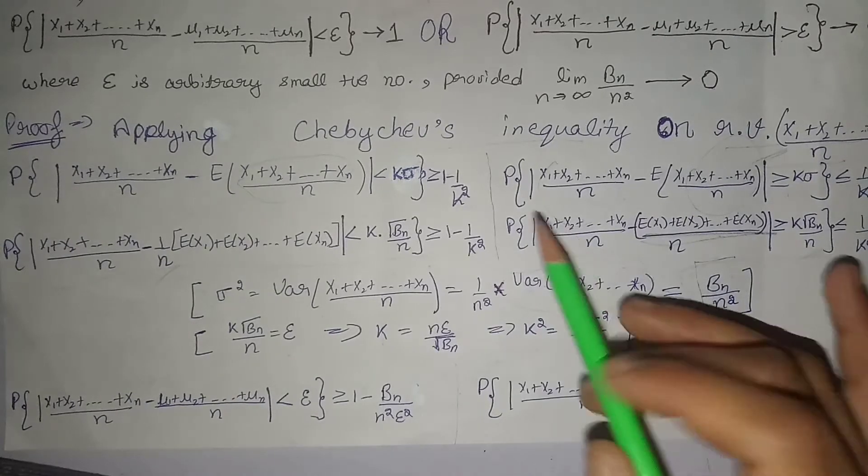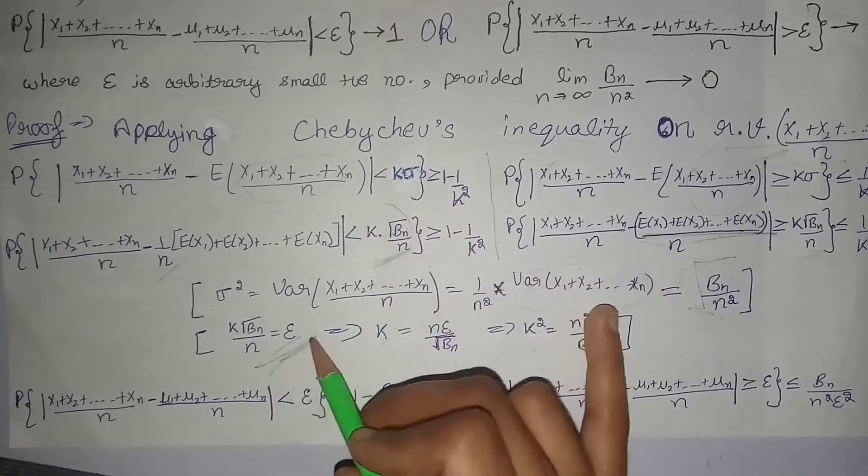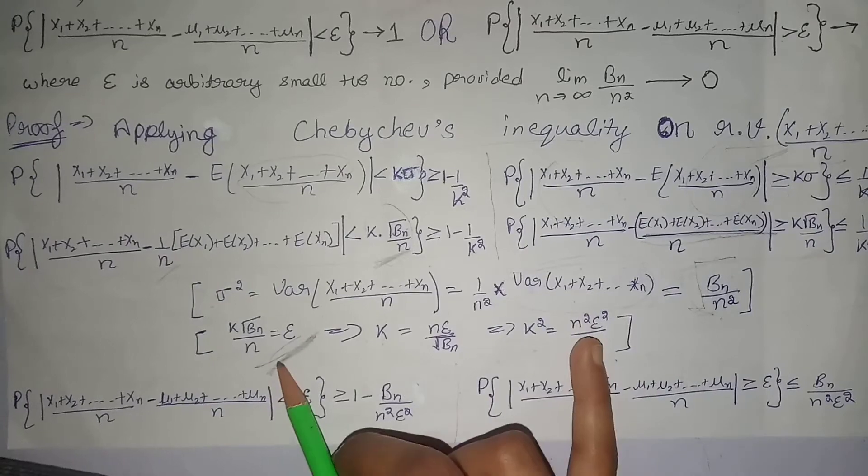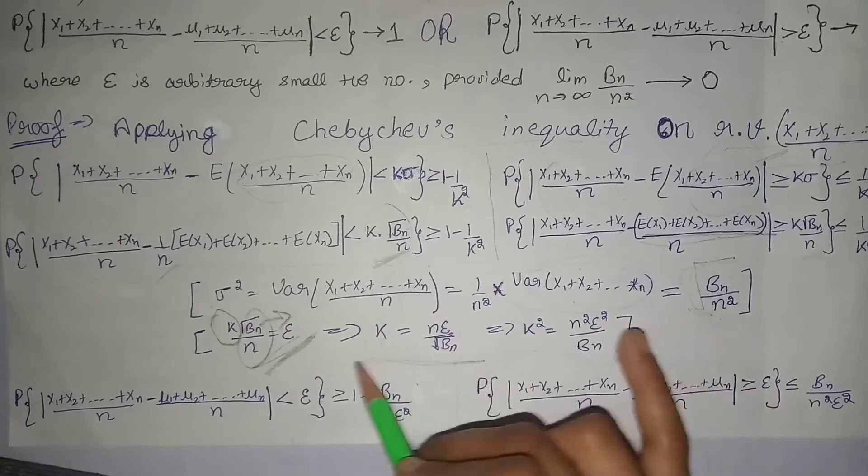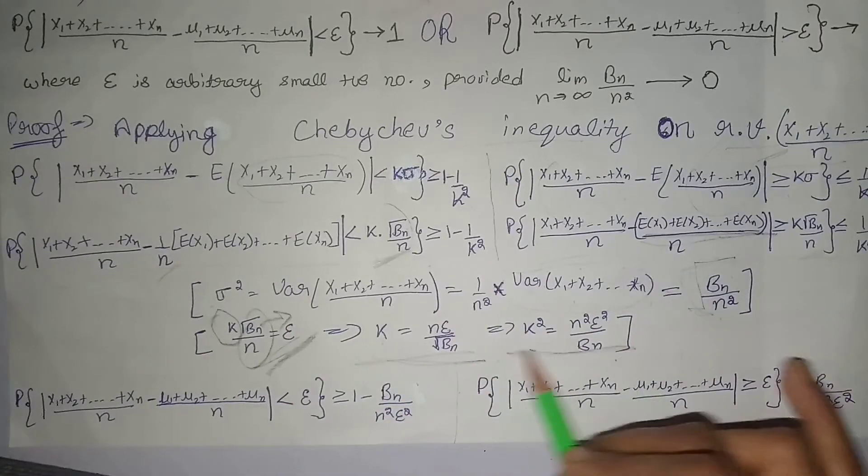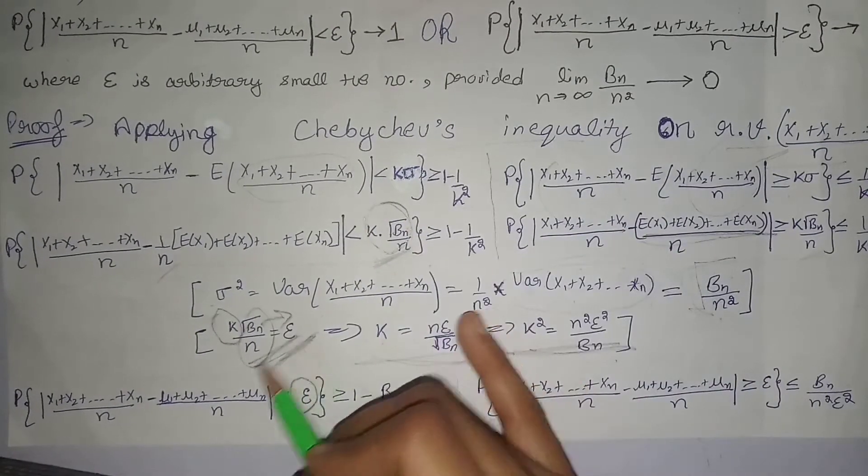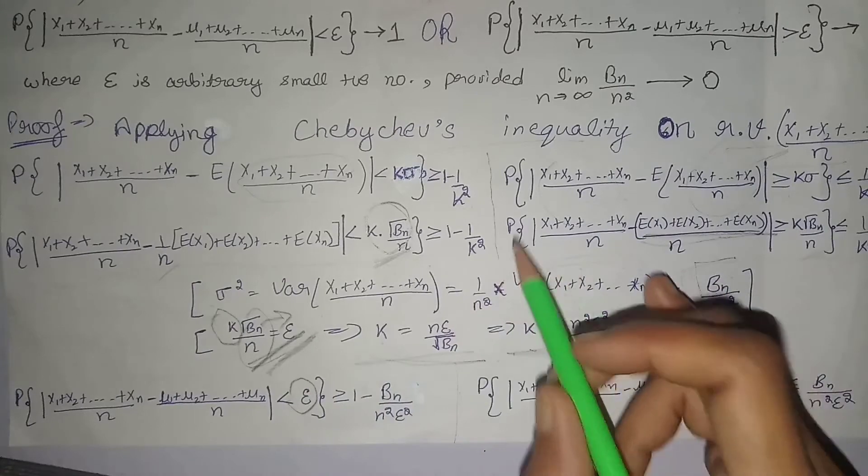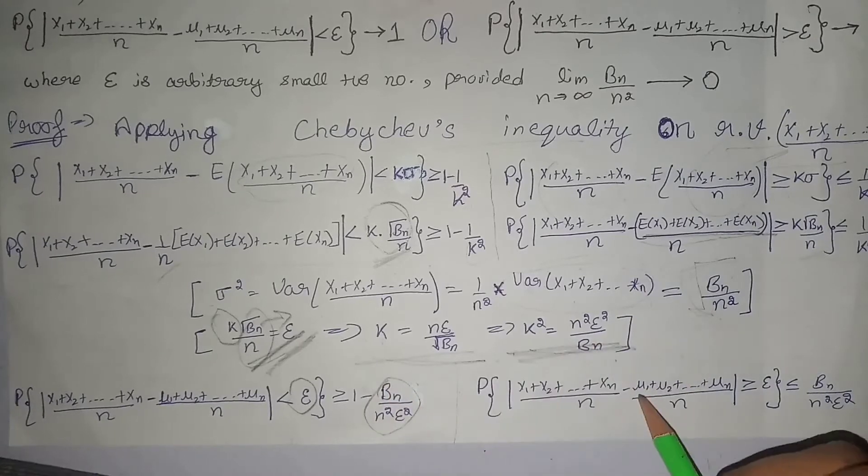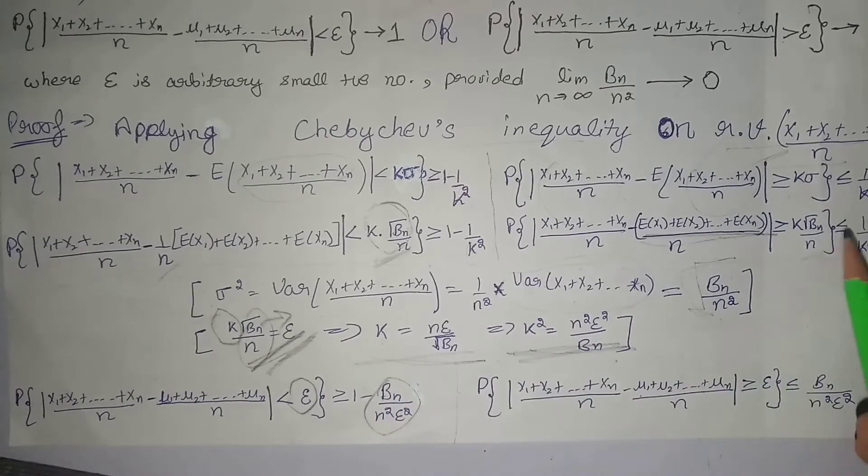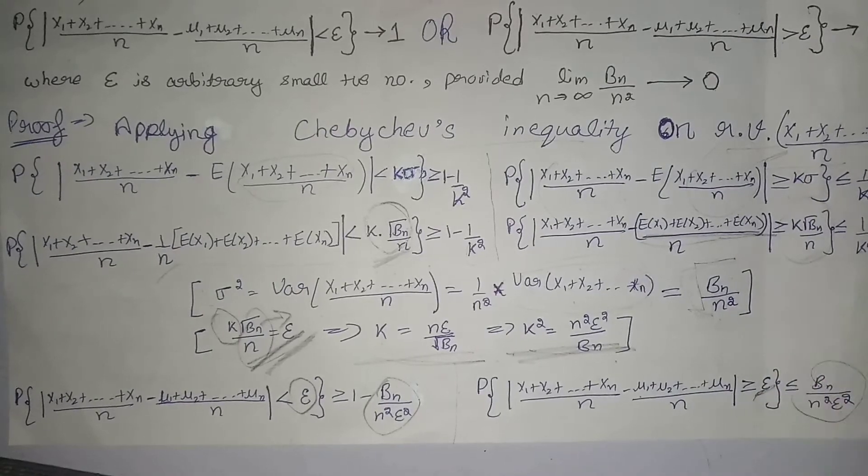Next, we put epsilon for this term. When we put epsilon, we find the value of k from this term. This term moves to that side, then the value of k we get, and k square value we get is this. Now we put epsilon here because we substituted it. And then the value of k square we found last is this, so in place of k square we put this. Same on this side, in place of this term we put epsilon, and in place of k square we put this term.